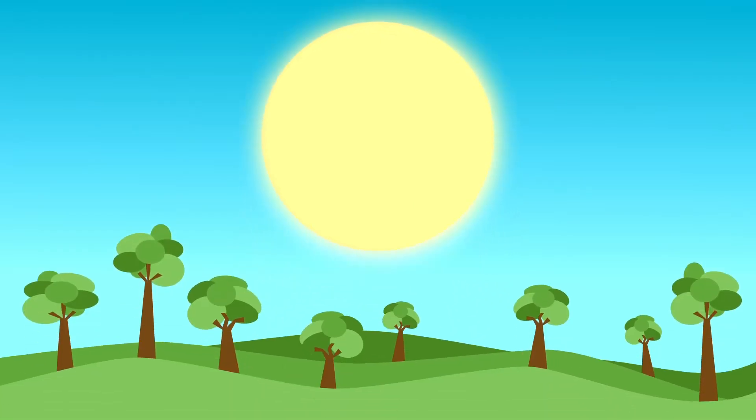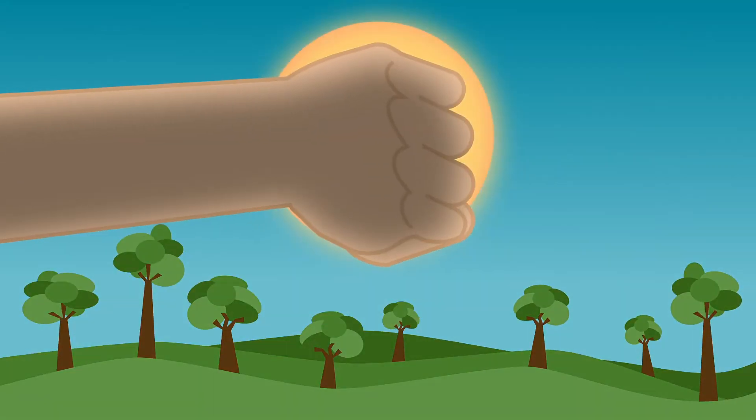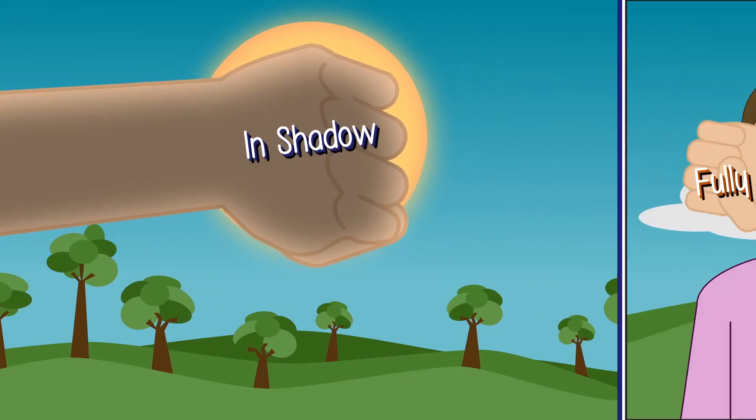Let's look at the sun. Oh, jeez, that's better. Now, our fist is blocking the sun from our eyes. Right now, the half of our fist closest to us is dark. But we know that the other side is fully lit.